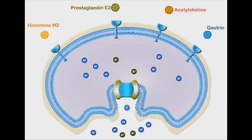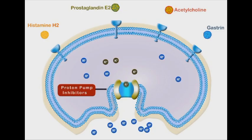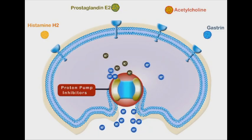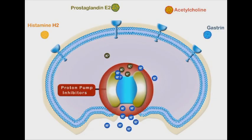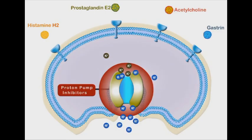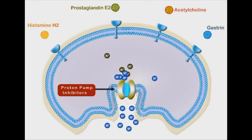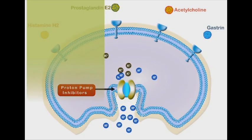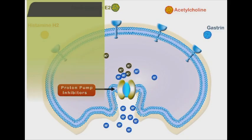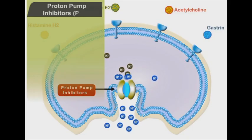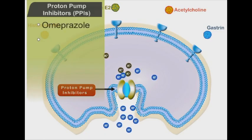Logically, direct closure of proton pumps will significantly decrease gastric acid secretion. In fact, the proton pump inhibitors group is the most effective suppressor of gastric acid secretion. Proton pump inhibitors include omeprazole and esomeprazole.